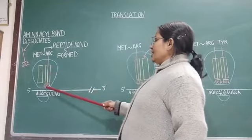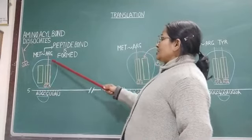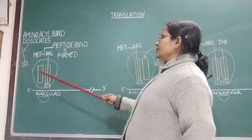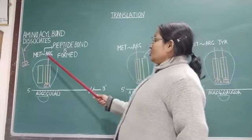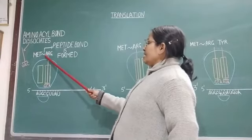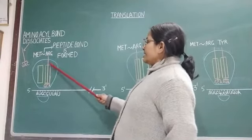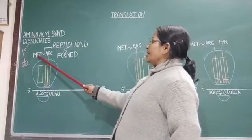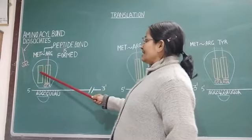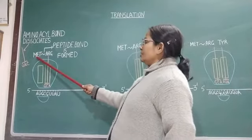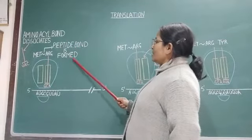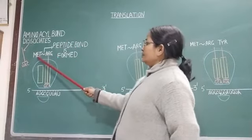Now, the amino group present on the tRNA at A site carries out nucleophilic attack on the COOH group of the amino acid present on P site. In this case, the methionine. And as a result, peptide bond is formed between arginine and methionine.